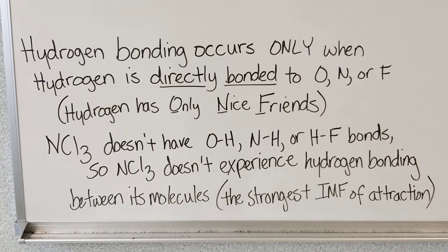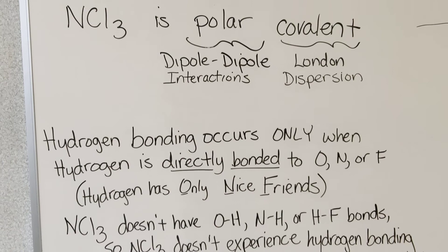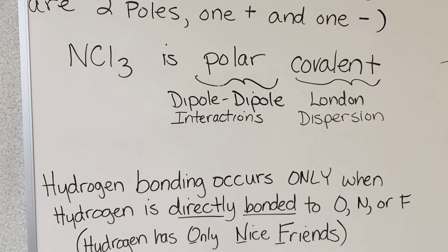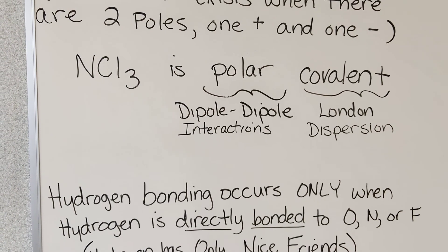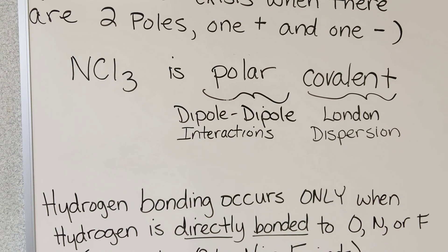If it had hydrogen bonding, it would also be polar, and so it would also have dipole-dipole interactions, and it would be a covalent molecule, so it would have London dispersion. NCl3 has only these two forces of attraction between its molecules.